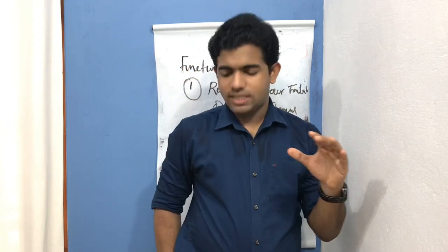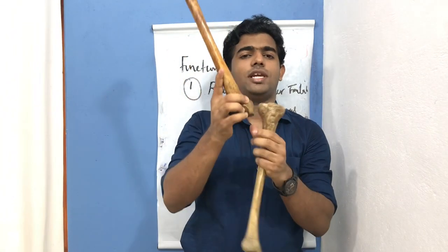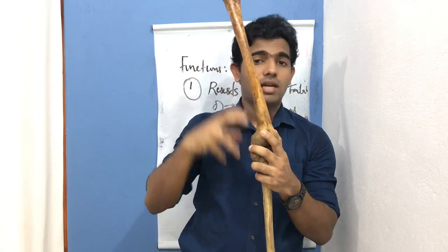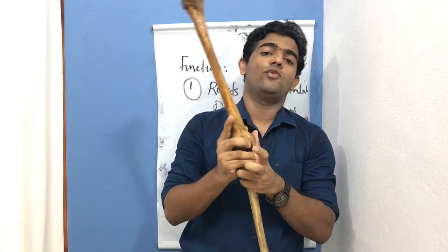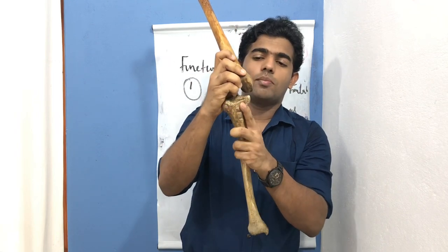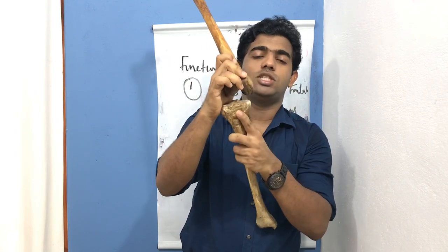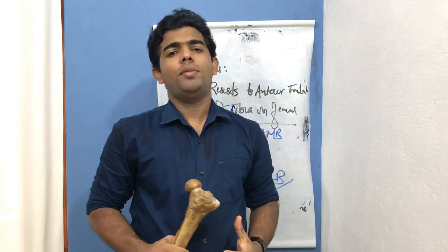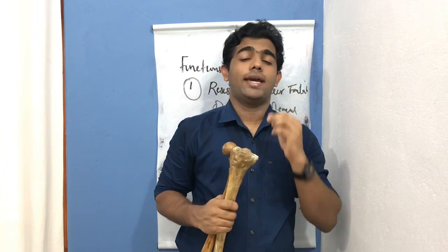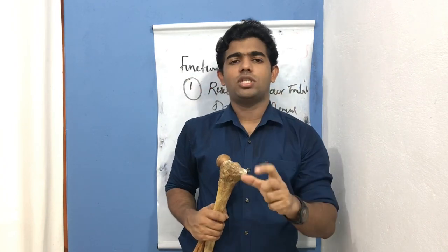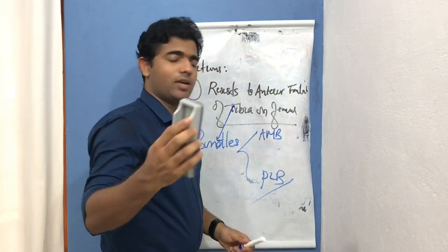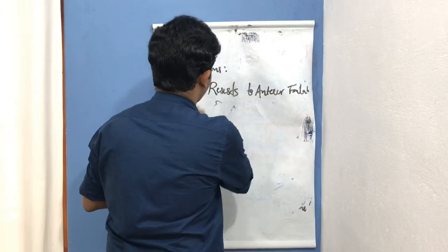The knee joint has the least amount of anterior translation during extension because the posterolateral bundle is very strong and there are other reinforcements in extension. Whereas at 30 degrees of flexion you have maximum anterior translation of the tibia, because the anteromedial bundle is not fully tight yet at 30 degrees — it is still getting tighter. So at 30 degrees you have maximum motion, and in full extension you have the least possible anterior translation of the tibia.